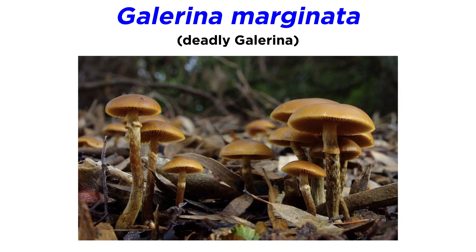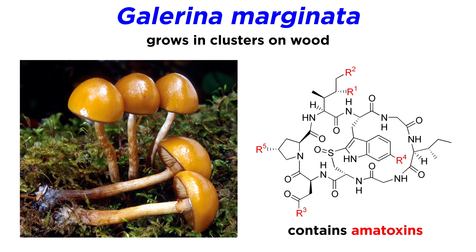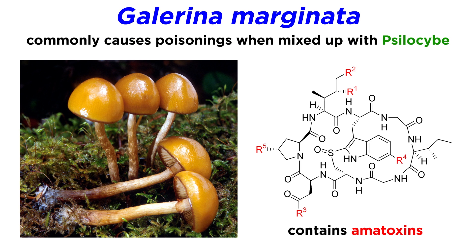The most infamous species of Galerina is Galerina marginata, or the deadly Galerina. This little brown mushroom grows in clusters on wood. It contains amatoxins, which in very small doses cause extreme liver and kidney damage. Generally, poisonings from this species occur after mistaking the mushroom for a species from the genus Psilocybe.